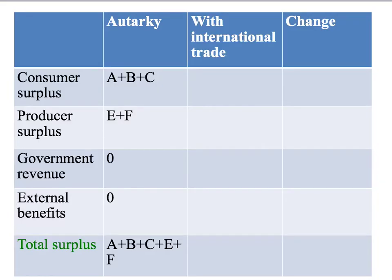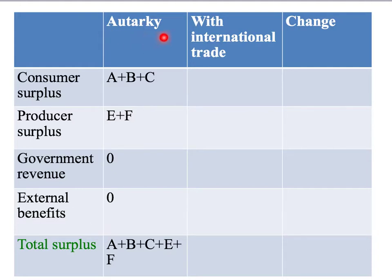So total welfare initially is A plus B plus C plus E plus F. On our table, consumer surplus is A plus B plus C, producer surplus is E plus F, and we've got no government revenue or external benefits. So total surplus is A plus B plus C plus E plus F. That's the situation without trade, or in autarky.